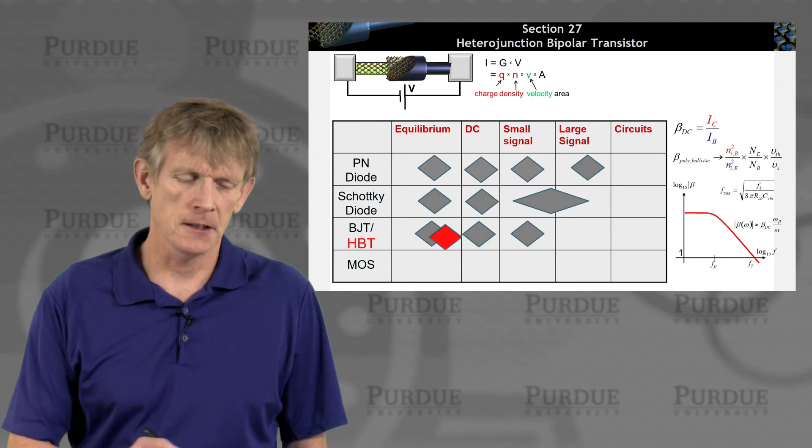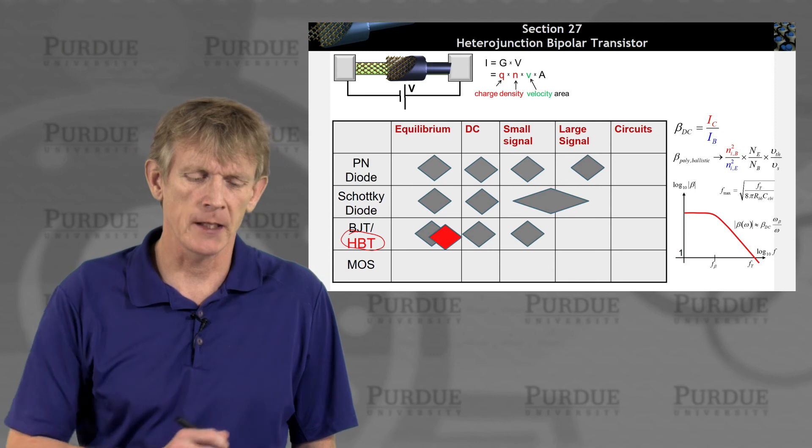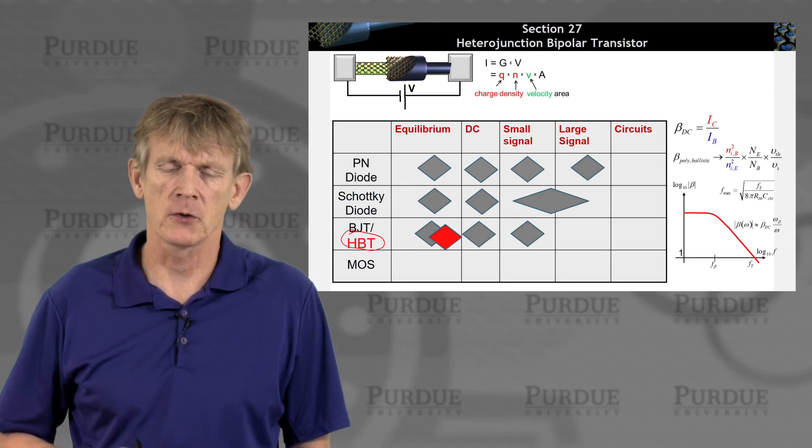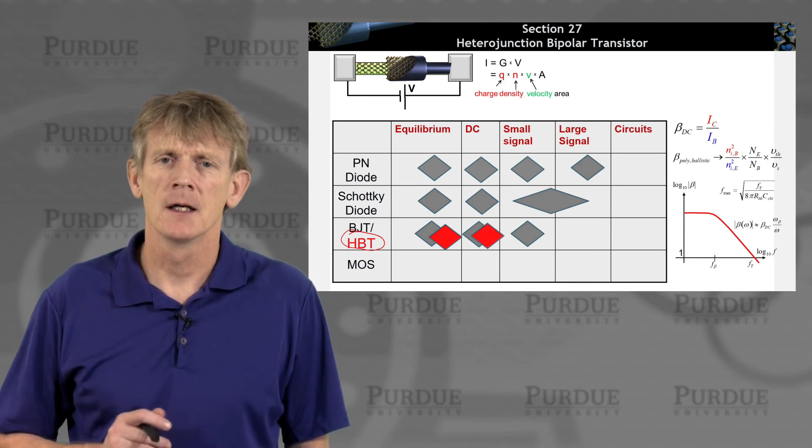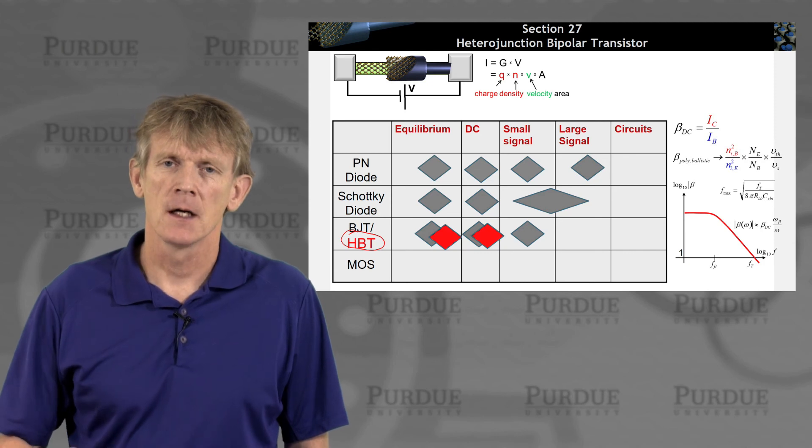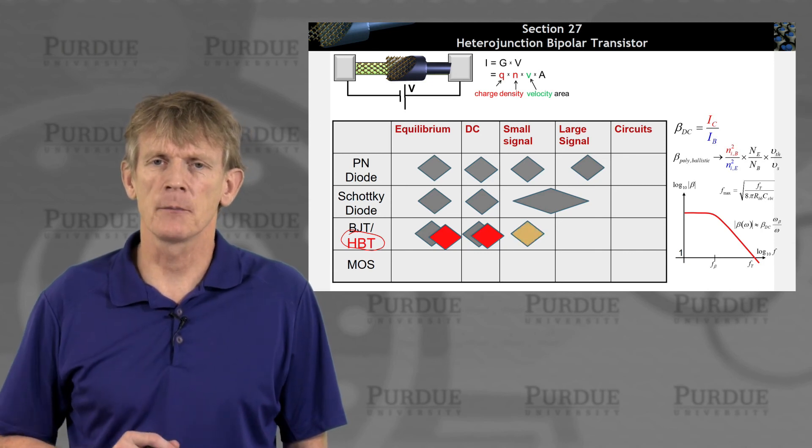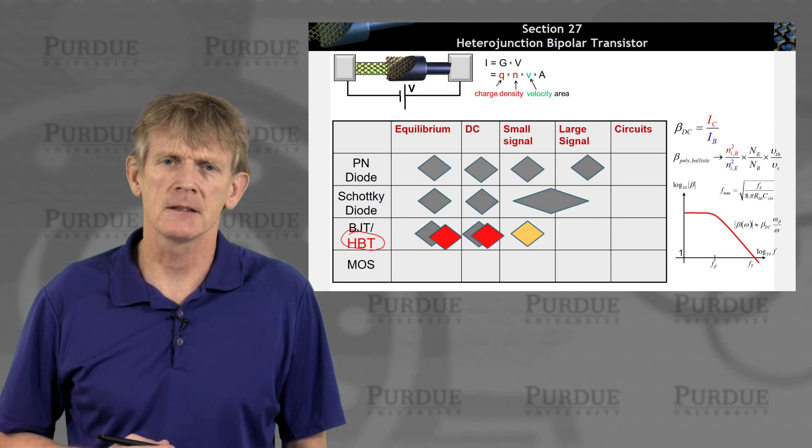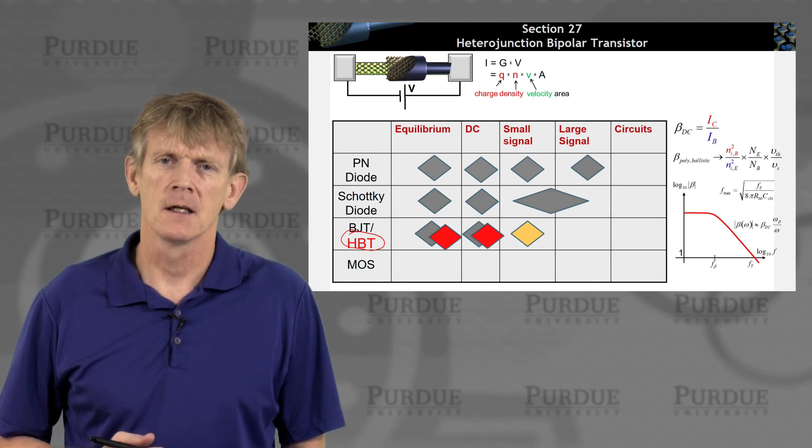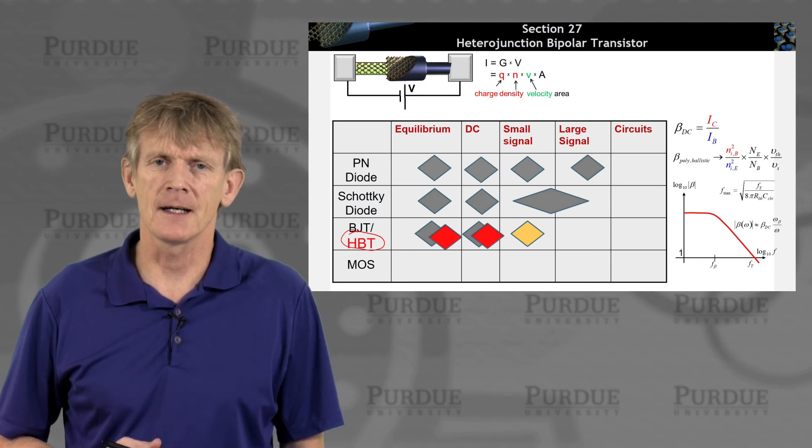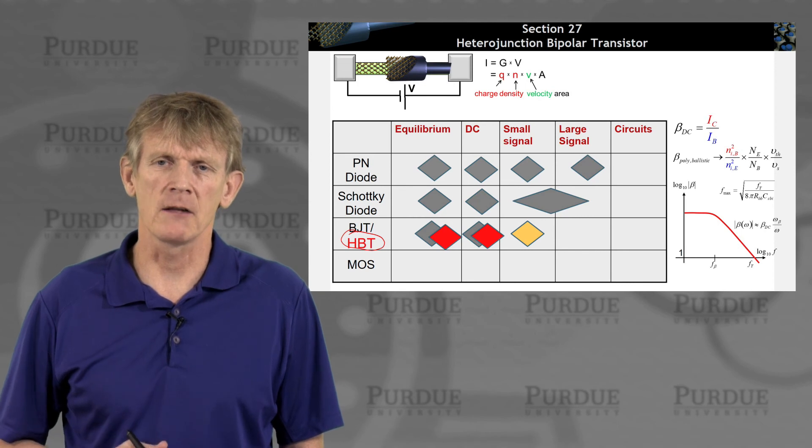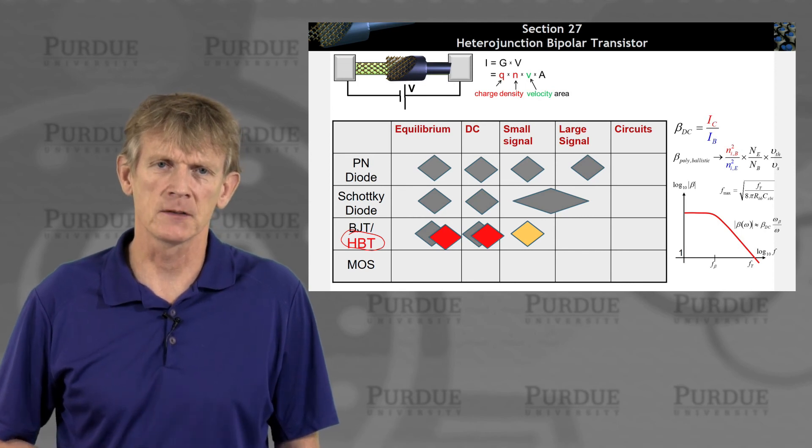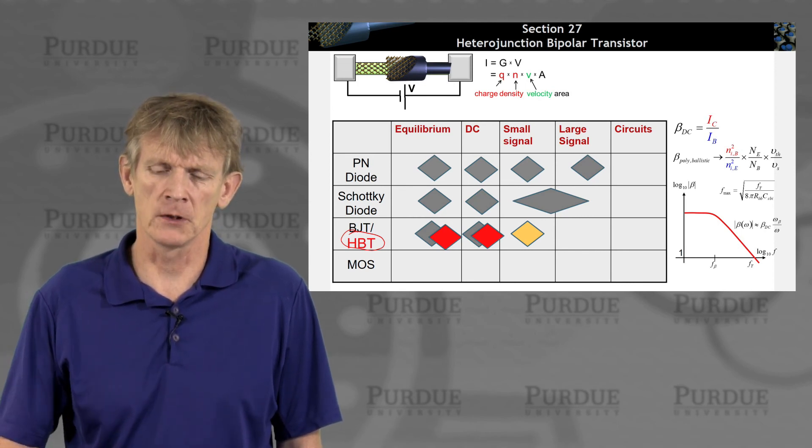We're now here at the HBT, heterojunction bipolar transistor. We'll, of course, start from equilibrium, go to DC, and then a lot of the small signal capacitances that we already discussed for the BJT and for the PN diode are going to be just as relevant here, so we're not going to cover that explicitly, but all of that knowledge will transfer.